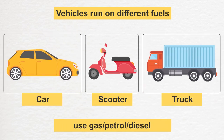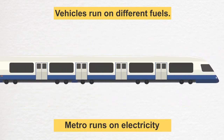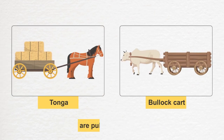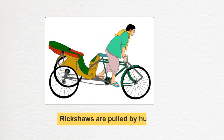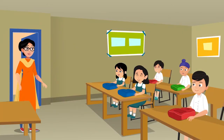The teacher continued: vehicles run on different kinds of fuel. Some vehicles like scooter, car, and truck run on gas, petrol, or diesel. Some like metro rail run on electricity. Some like bullock cart and tonga are pulled by animals, and some like rickshaws are pulled by humans. Now a question: are vehicles only used to transport humans?